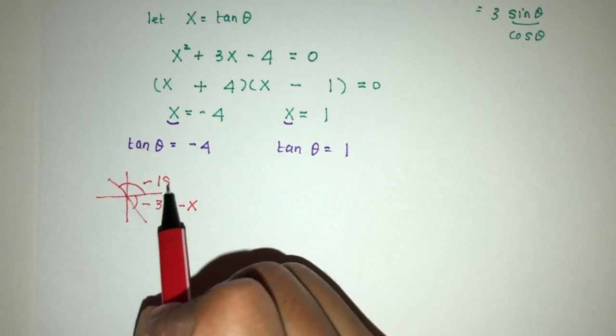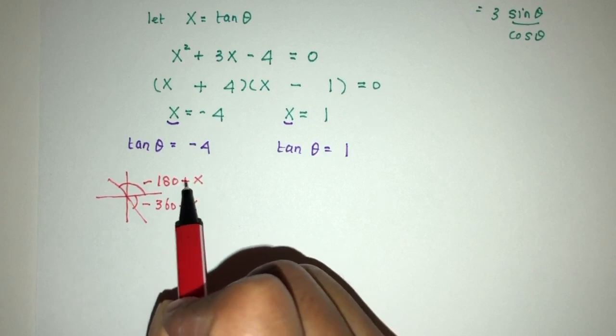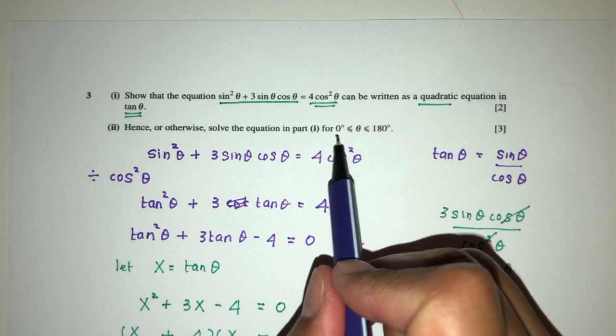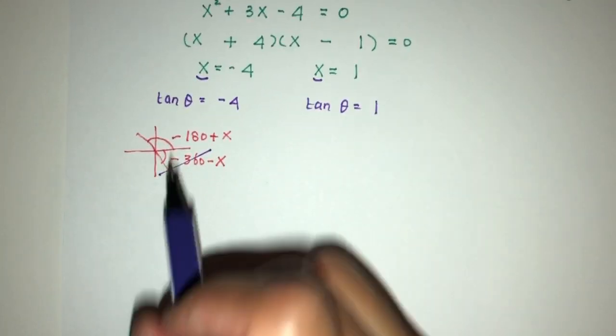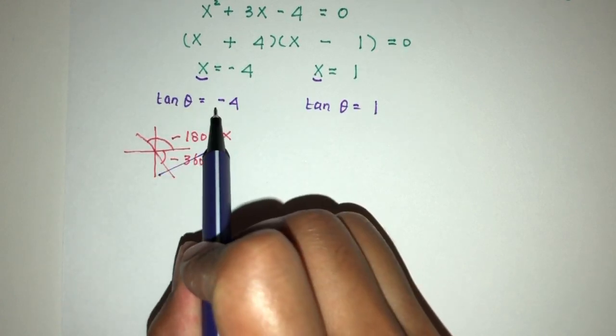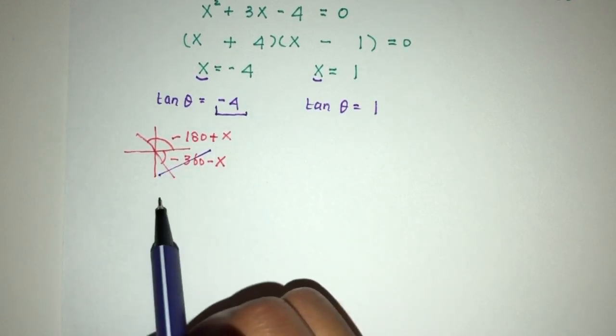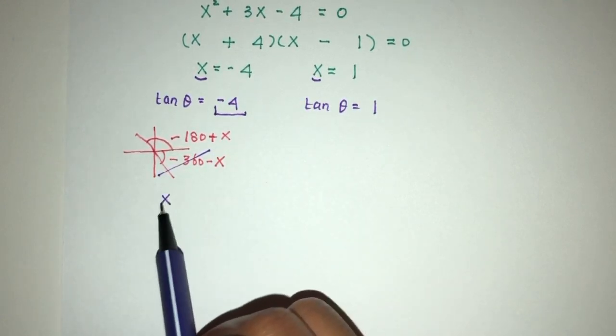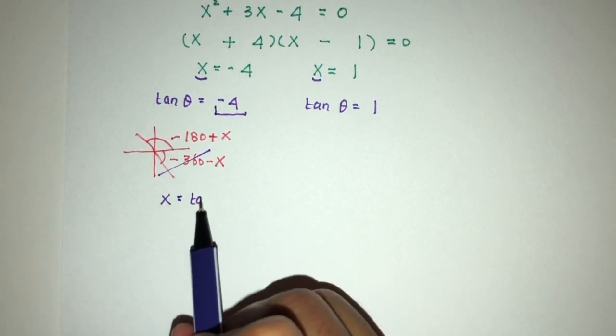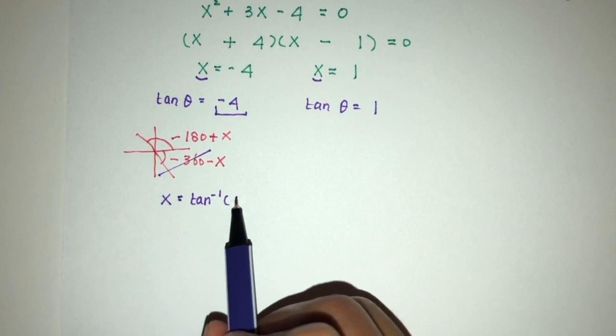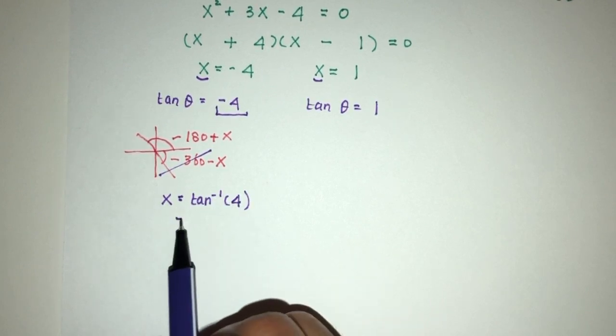The angle we're trying to find is only between the first and second quadrant, so we don't need this one. Because it is negative, I will first try to find x. That will be tan inverse of the positive value of 4 to find x.